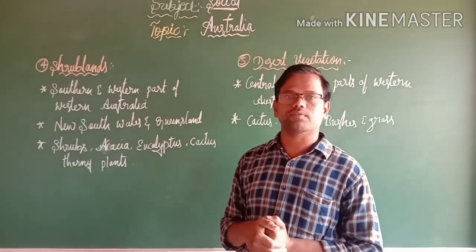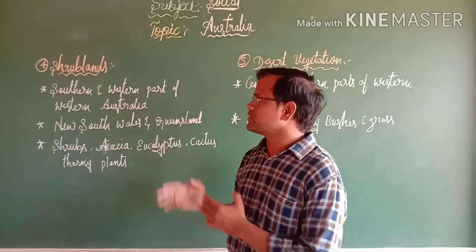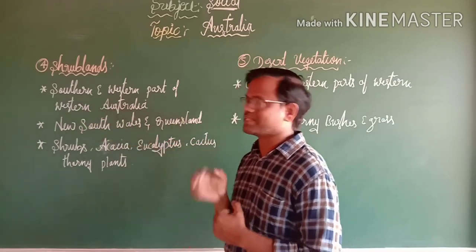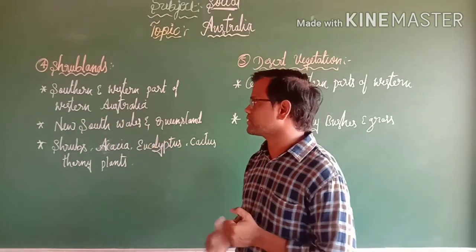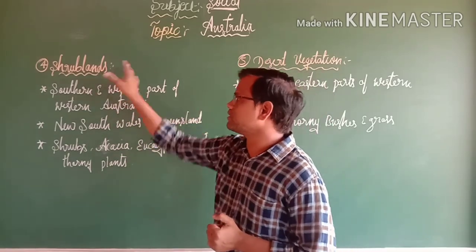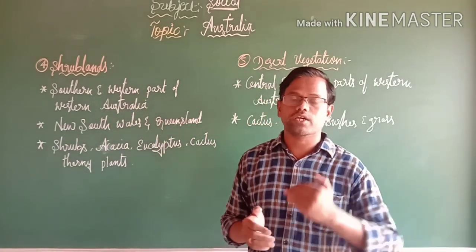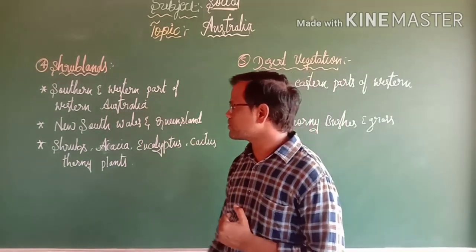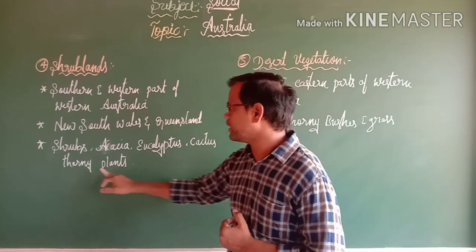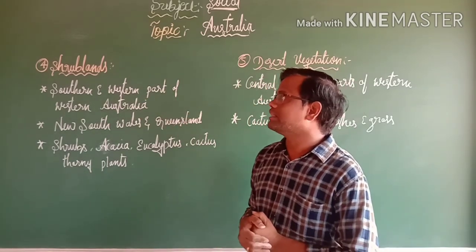The fourth natural vegetation is shrubland, located in the southern and western part of Western Australia, and also in New South Wales and Queensland. The important trees found in shrubland are shrubs, acacia, eucalyptus, cactus, and thorny plants.